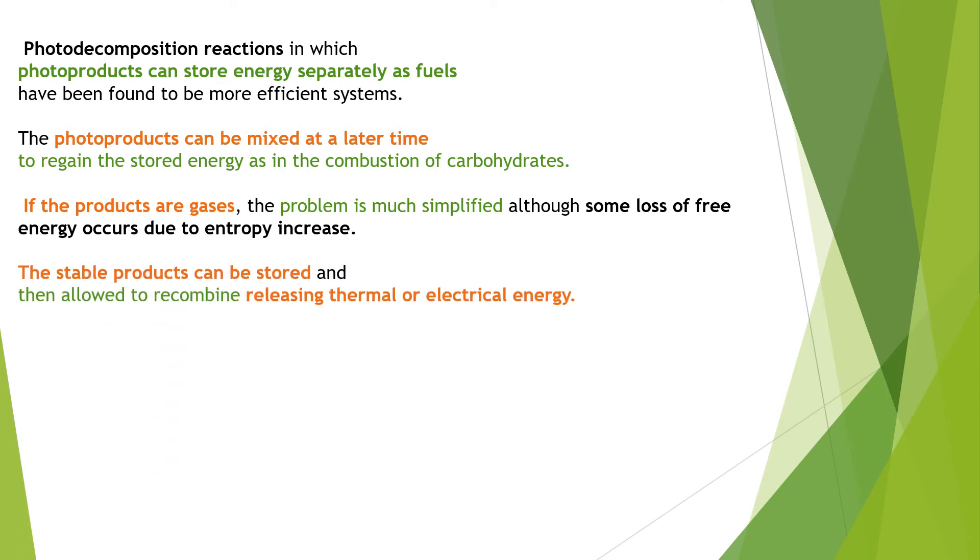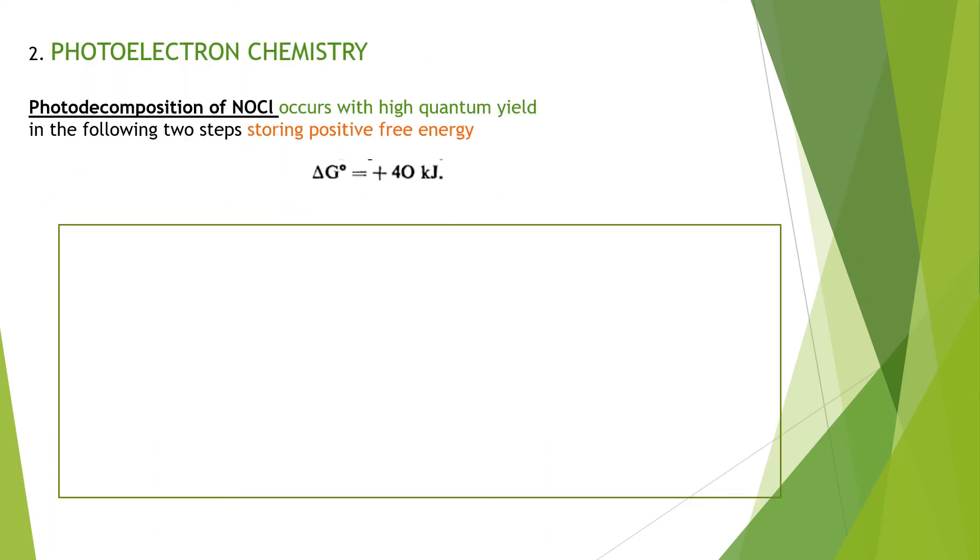If we are getting stable products, they can be stored and allowed to recombine, releasing thermal as well as electrical energy. Now photoelectron chemistry, which is the second part. In photoelectron chemistry, we will be covering two parts: the photodecomposition of NOCL and photolysis of water.